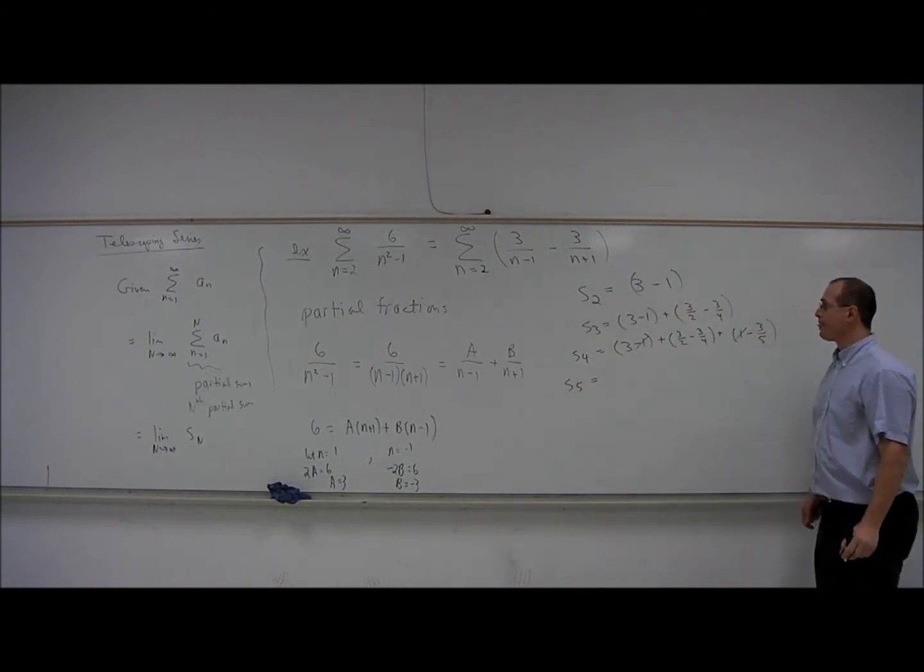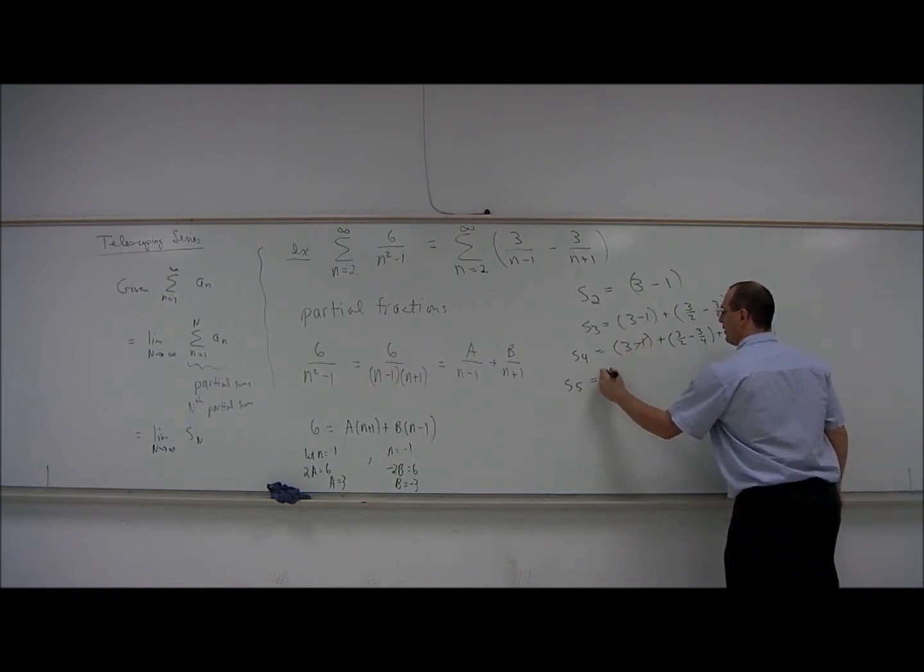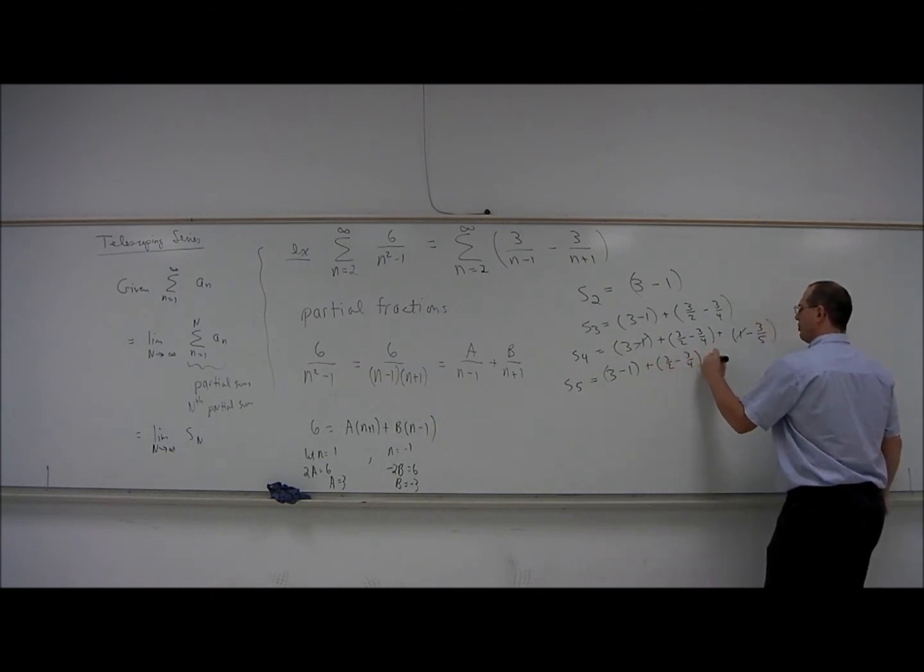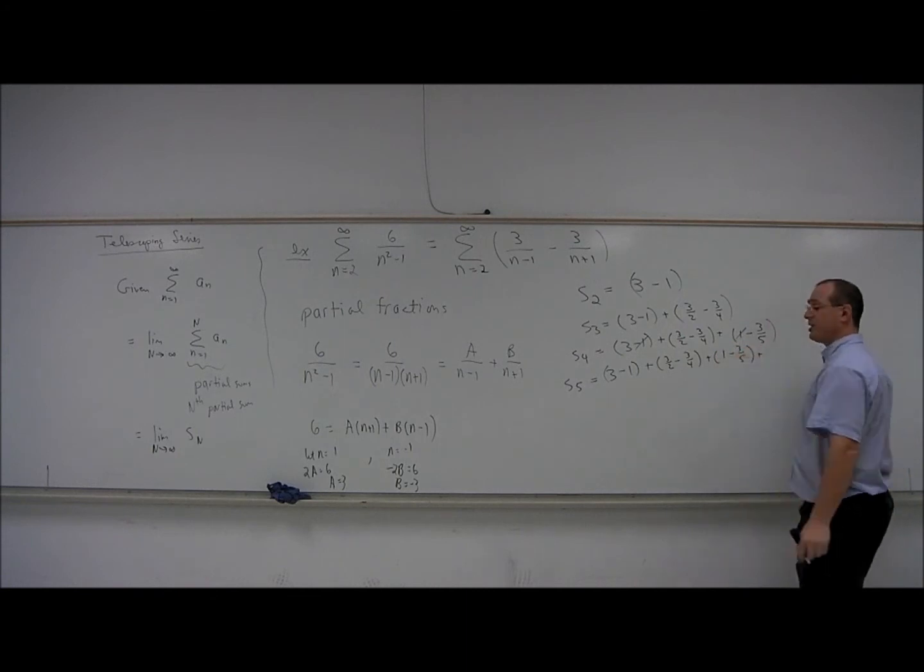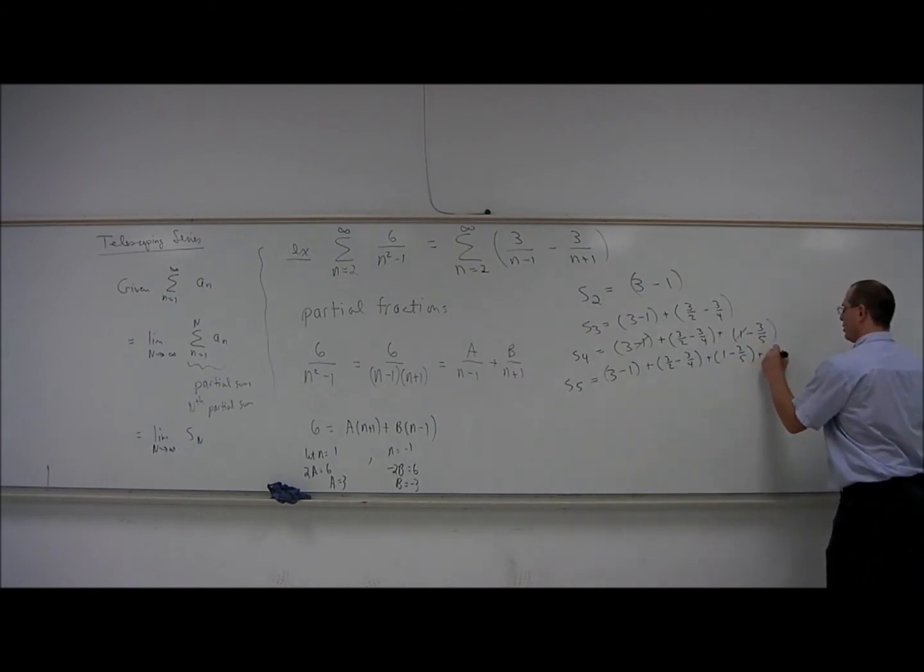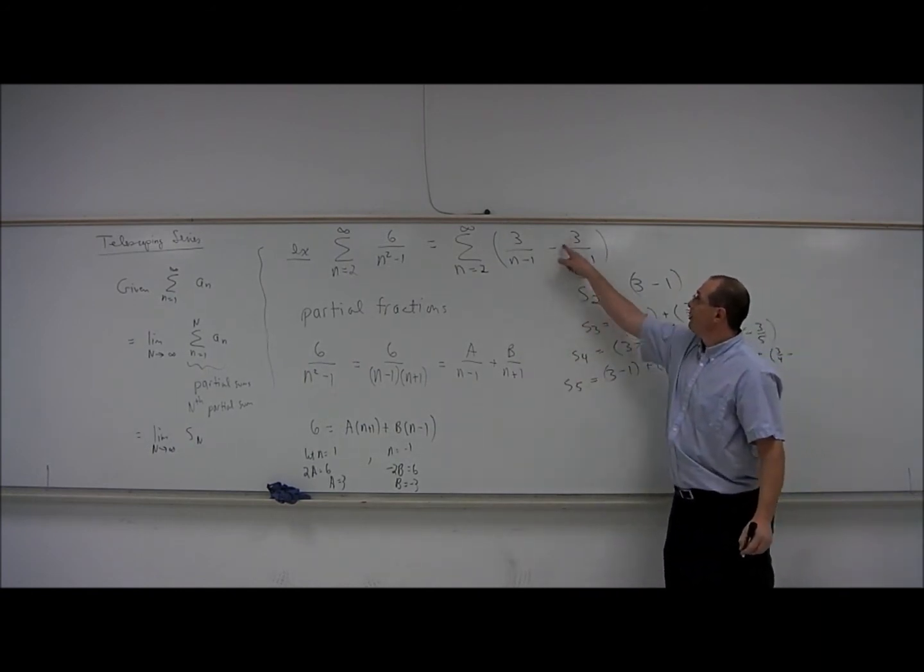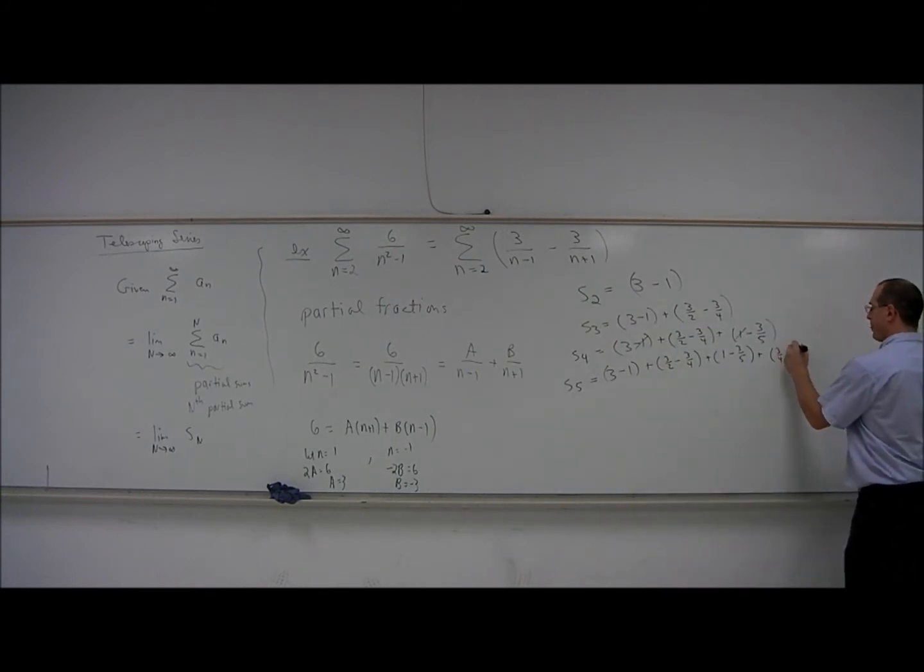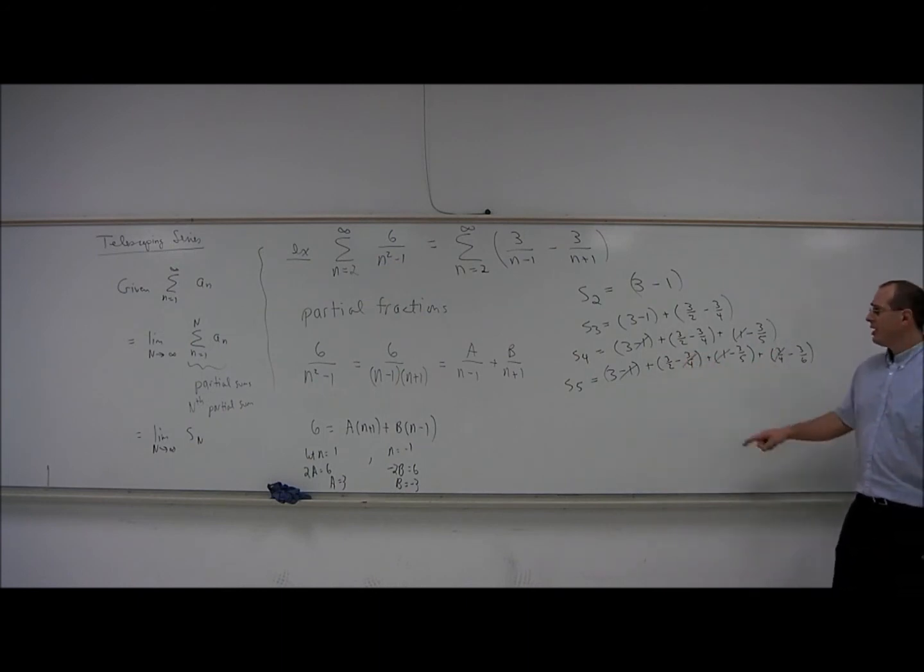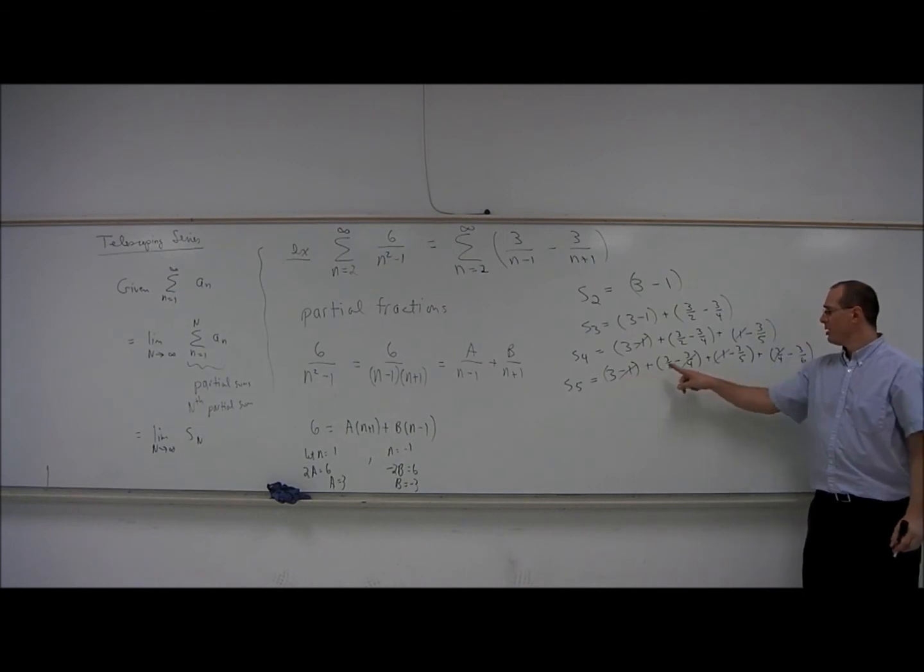Let's look at S5. For S5, we're going to have 3 minus 1. Let me write that back in. Plus 3 halves minus 3 quarters plus 1 minus 3 fifths plus... So if I plug in n equals 5, I get 3 quarters and then minus 3 sixths. I'm not going to reduce it. So now we have the 1s canceling and we have the 3 quarters canceling. So what you'll see is that every term is going to cancel with another term that's two terms later in the series.